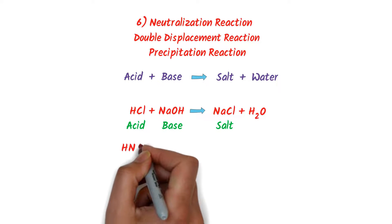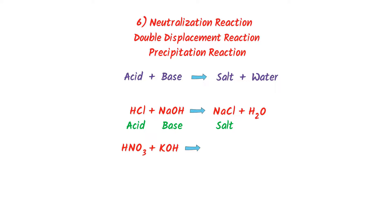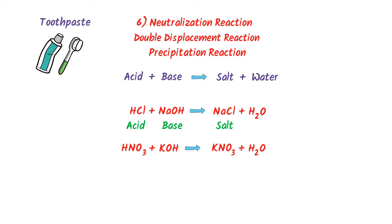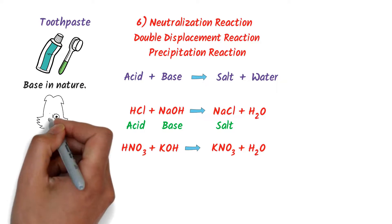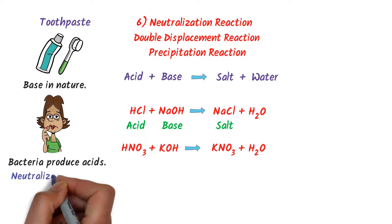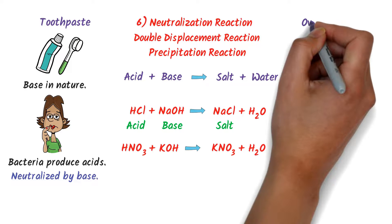Secondly, HNO₃ plus potassium hydroxide react together to form potassium nitrate plus water. Coming to the daily life examples: the toothpaste we use is basic in nature. There are bacteria in our mouth which produce different acids. When we brush our teeth with toothpaste, the base in the toothpaste neutralizes the acids produced by the bacteria in our mouth.